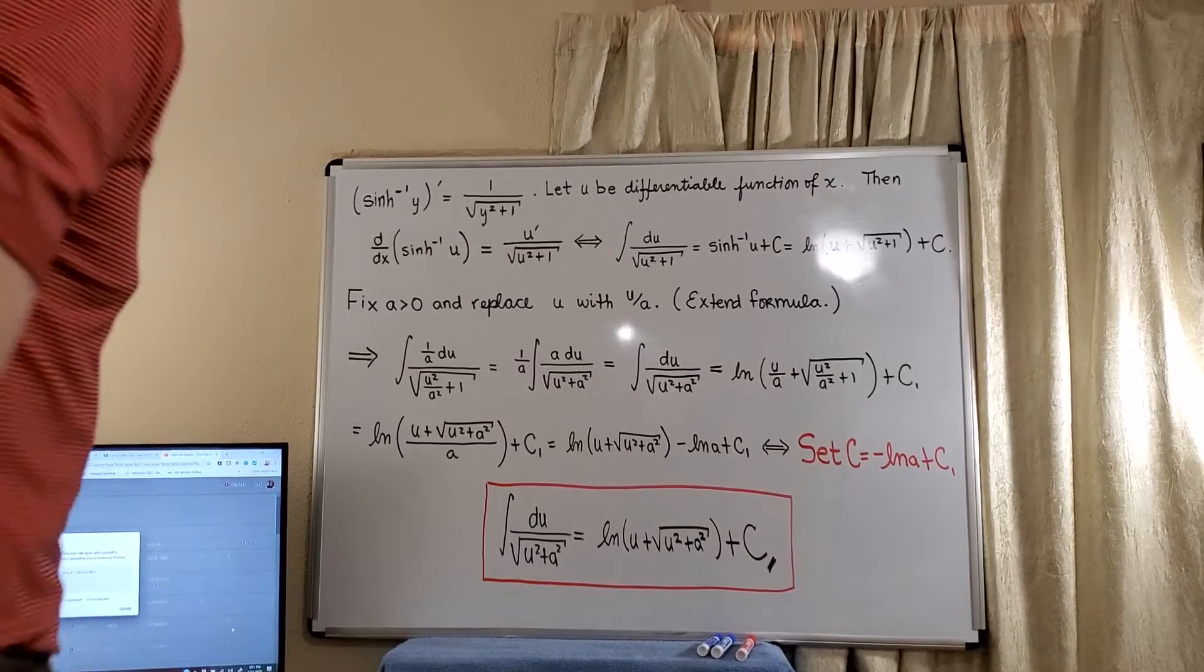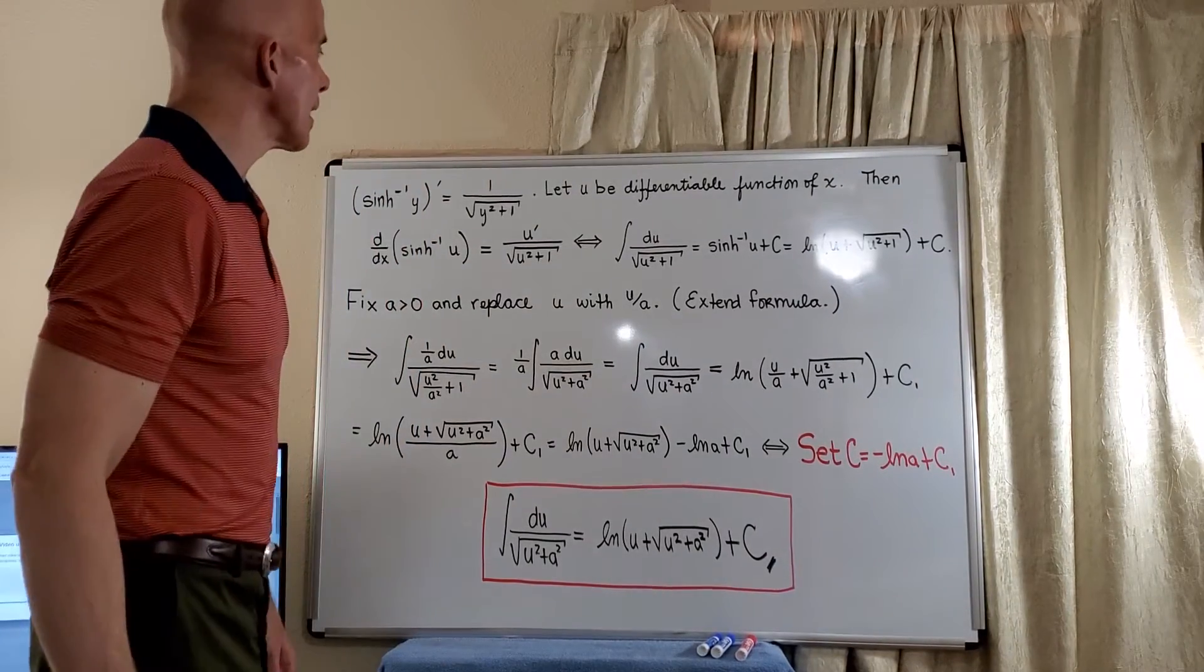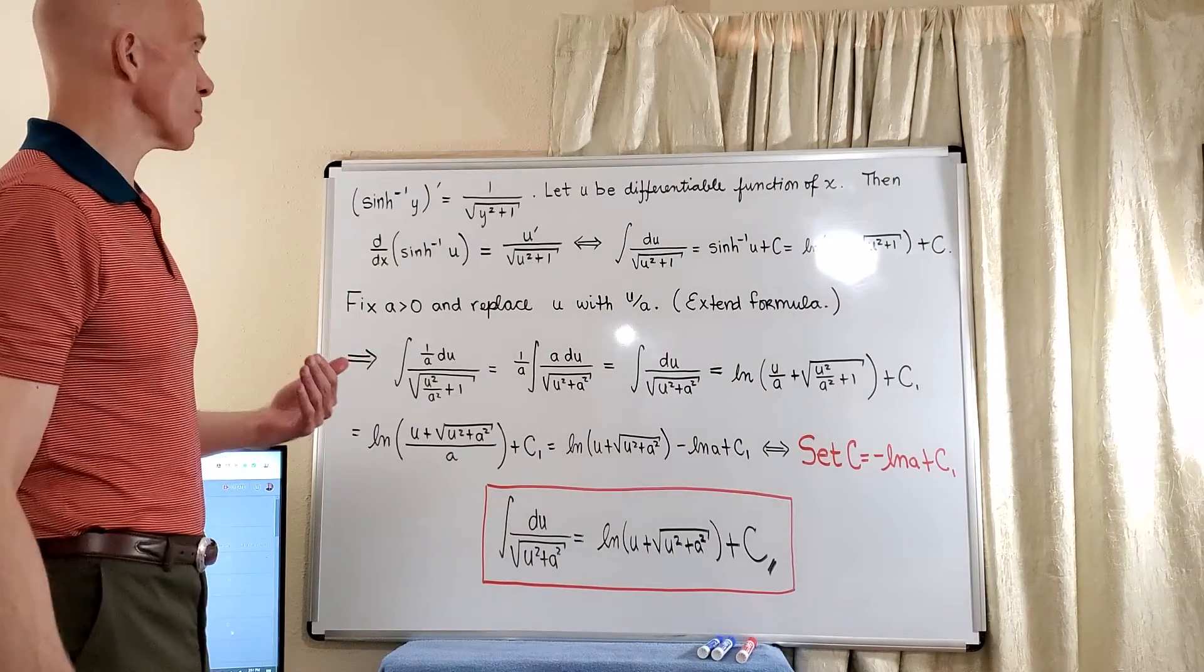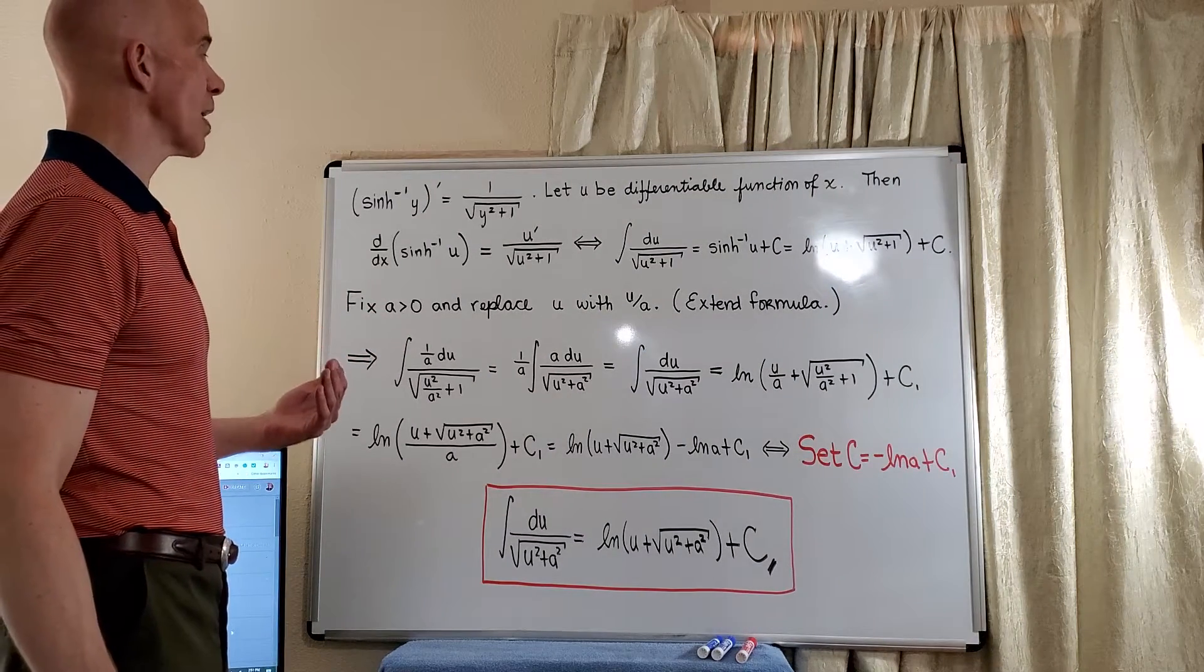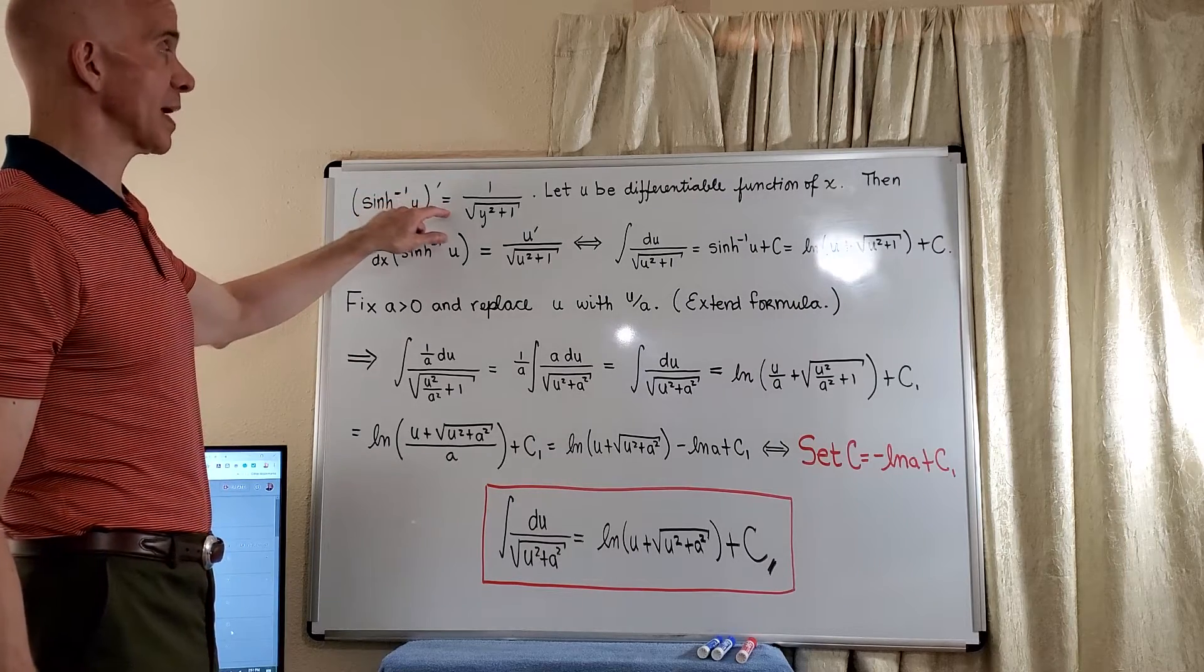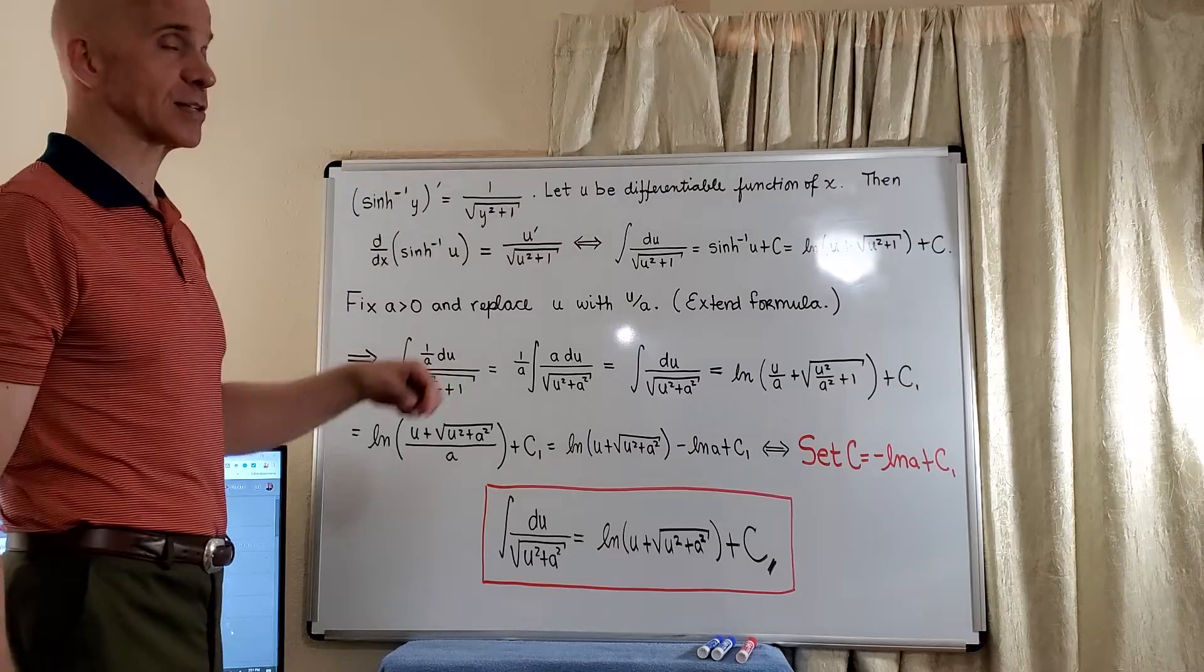Let's continue our discussion of the hyperbolic sine. In the last video, we actually derived the formula for the inverse hyperbolic sine and we also derived the formula for its derivative. So in this particular case, we got 1 over the square root of y squared plus 1.